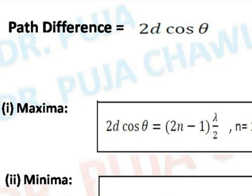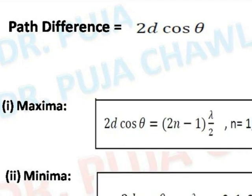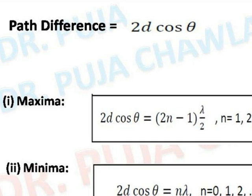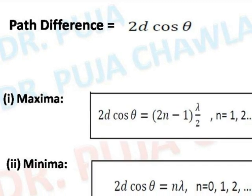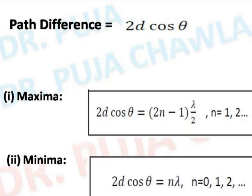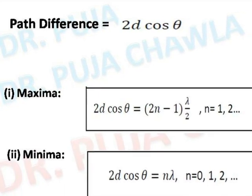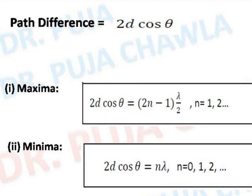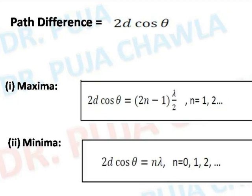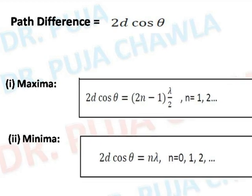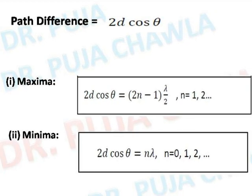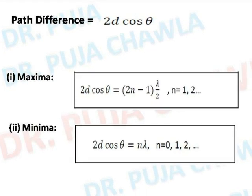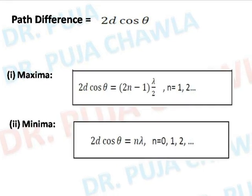How many fringes have crossed the field of view? That would be capital N. Initially when m1 and m2 prime was small d, the fringe pattern was at the nth fringe. When the distance changes to d plus x, it would be on the n plus capital N fringe. That means from small n to n plus capital N, capital N fringes have been shifted. So if I move the mirror through a distance small x, path difference changes by 2x and the number of fringes crossing the field of view is equal to capital N.